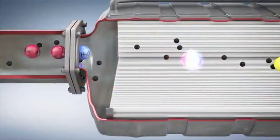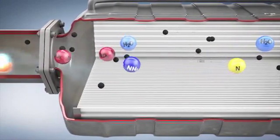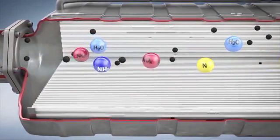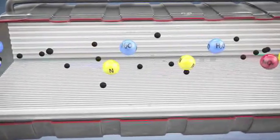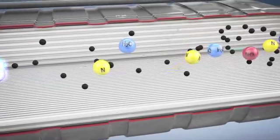In the second step, within the SCR catalytic converter, the ammonia reduces the nitrogen oxides from the exhaust gas to water and nitrogen, a component of air. After that, the particulate is filtered out by the particle filter.